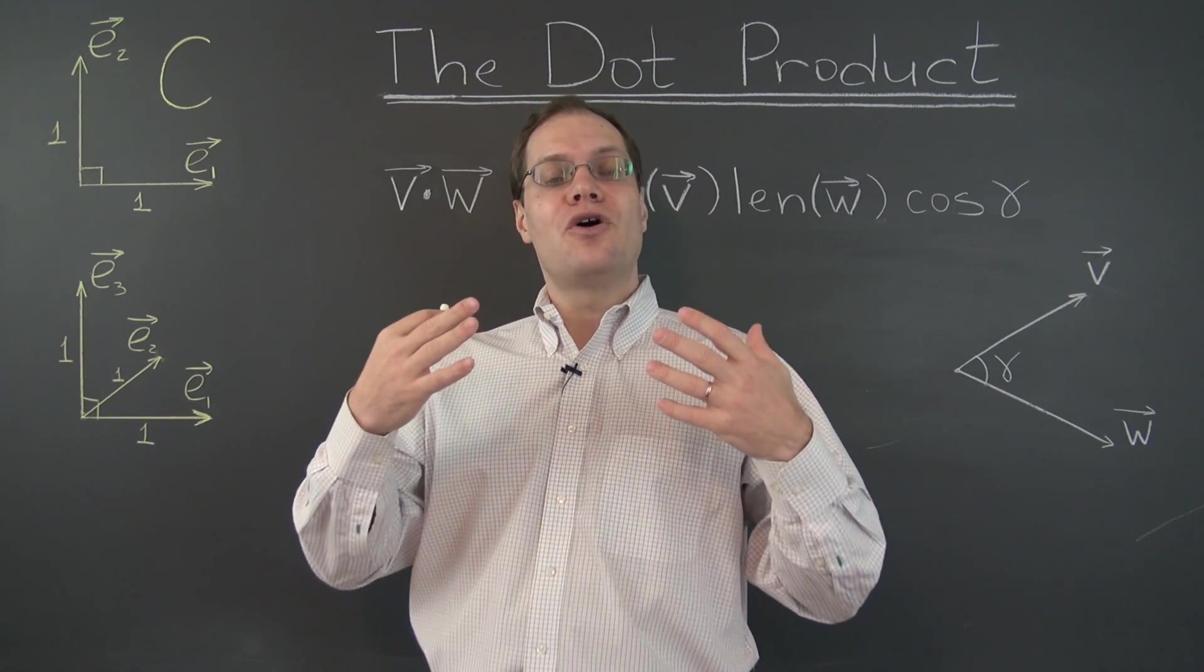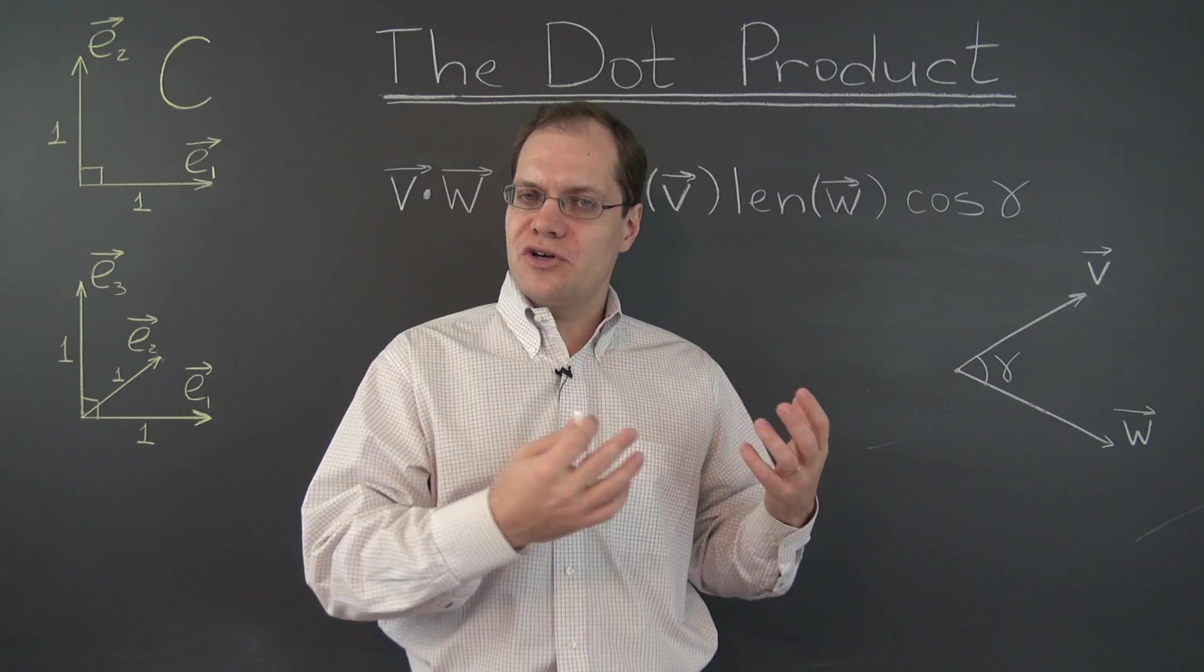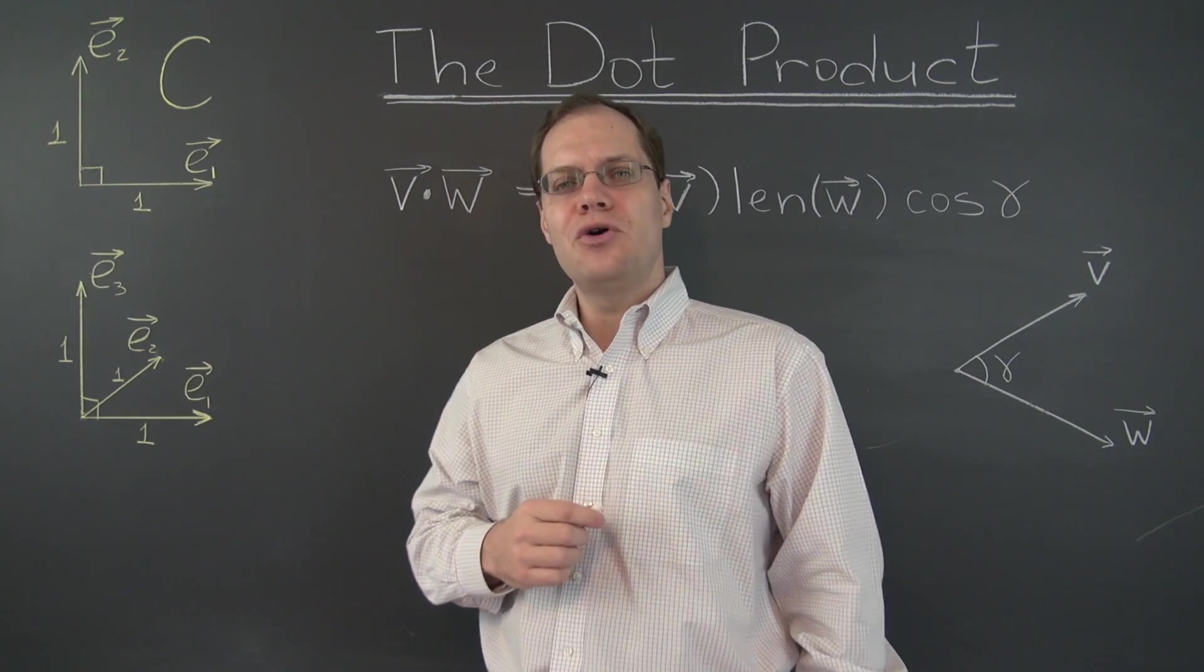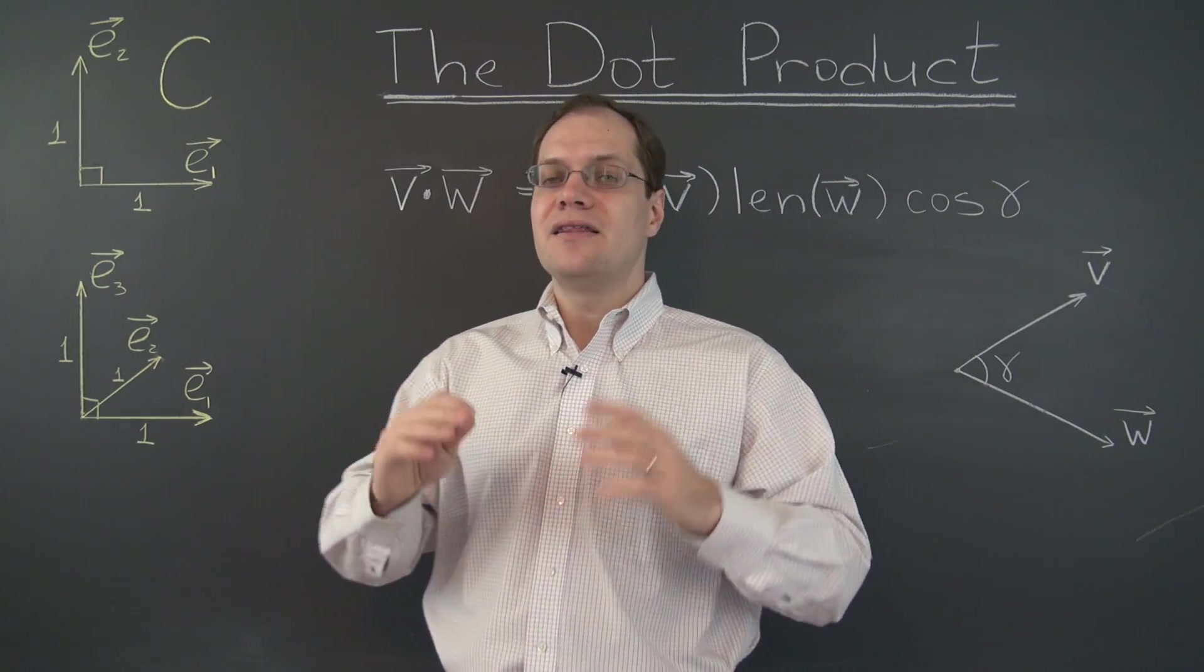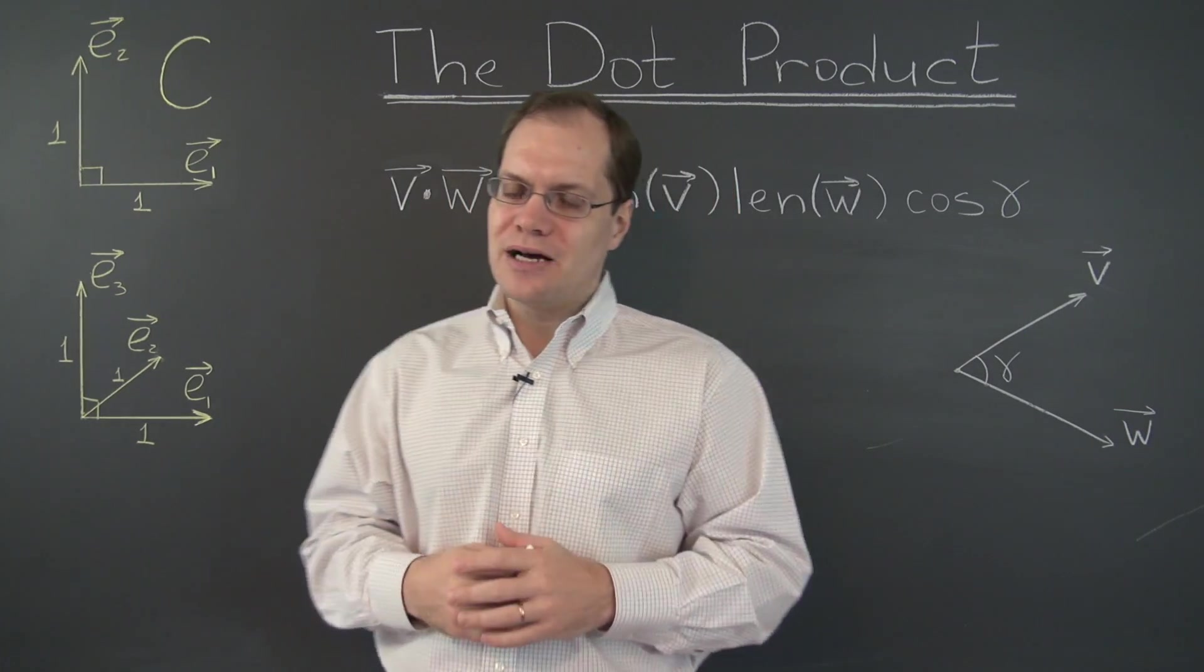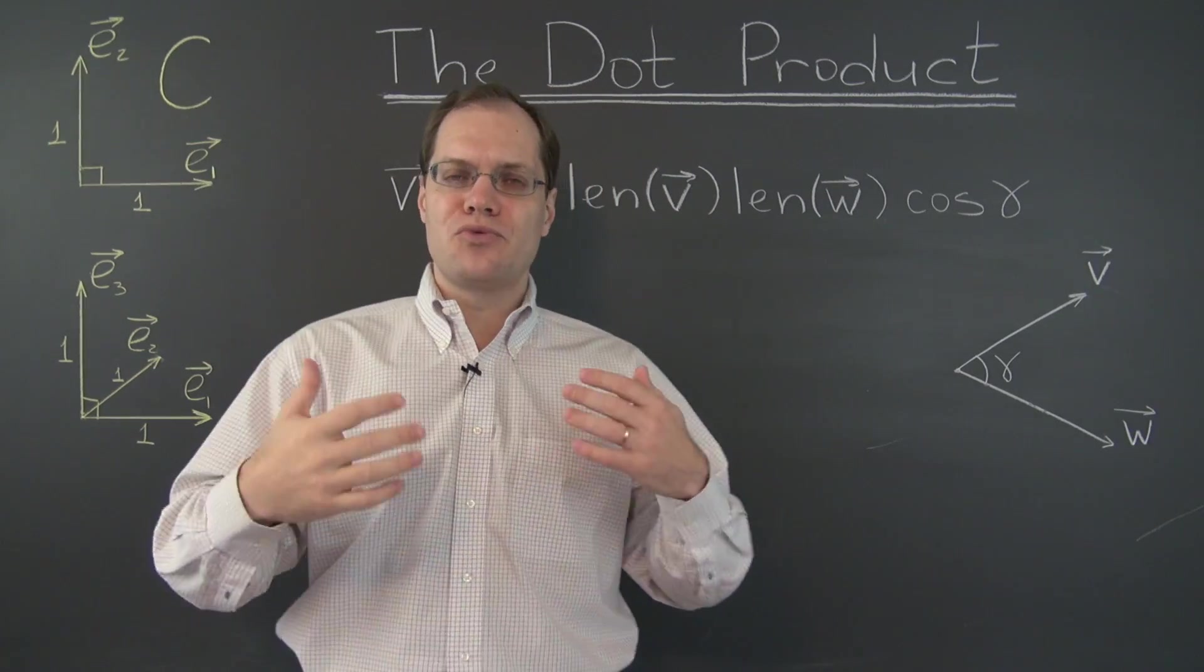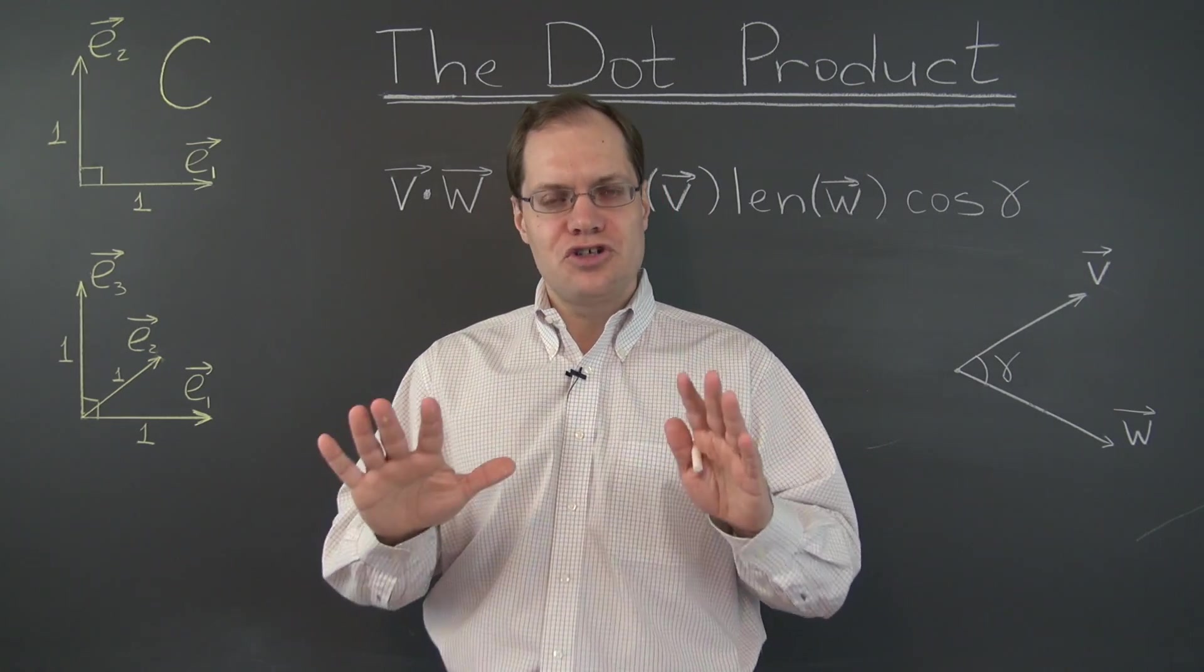You've already heard the term dot product when we were talking about matrix multiplication from the dot product perspective—when we evaluate the resulting matrix one entry at a time by dotting a row from one matrix by the column from the other. That meaning is related to the dot product we're about to discuss, but only when we bring component spaces back in a couple of videos. For now we'll talk about the dot product in a pure geometric setting.